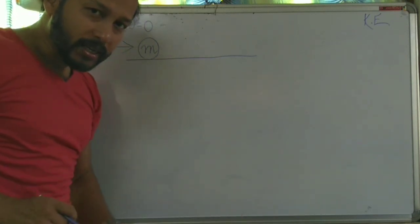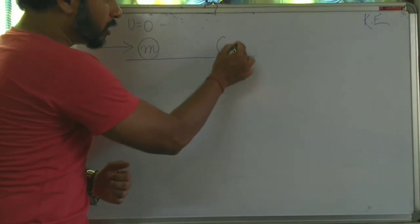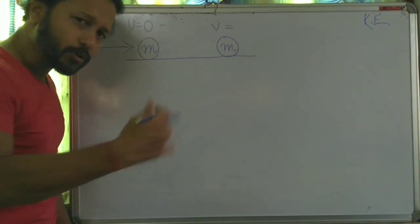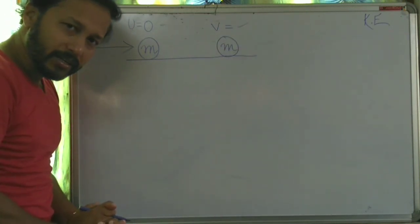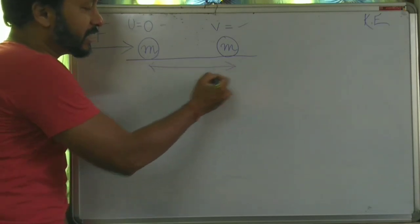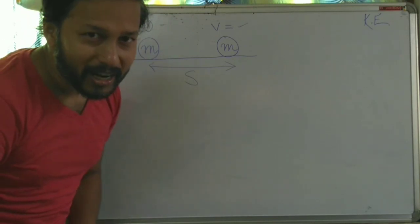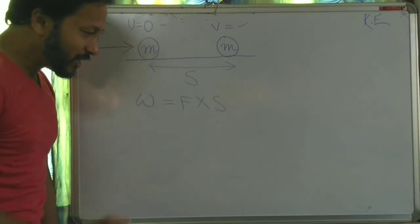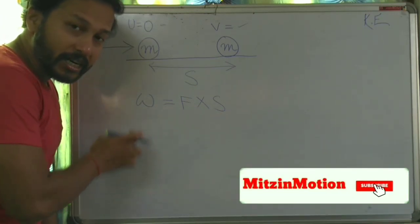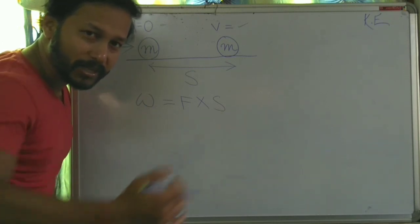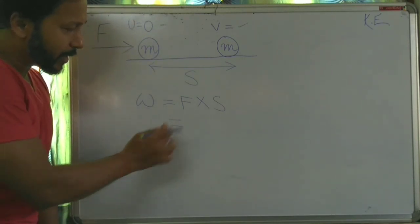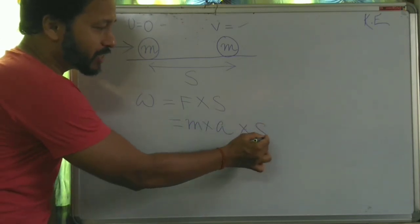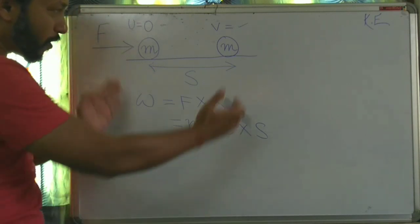When you are applying a force, the ball will gain some velocity — say, 10 or 20 meter per second. And the distance covered is S. So what is the work we have done? Amount of work equal to force into displacement. Work equal to force into displacement. Now, force means mass into acceleration, into displacement.